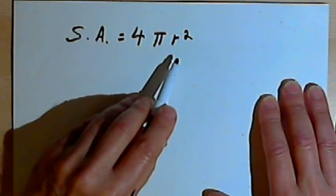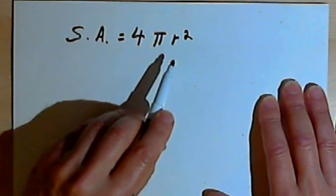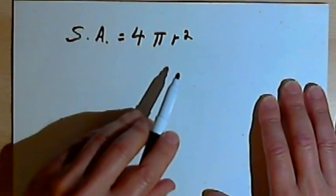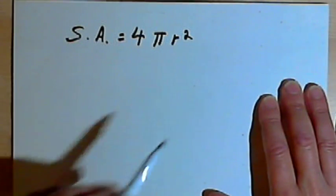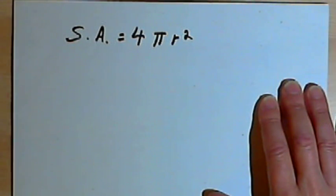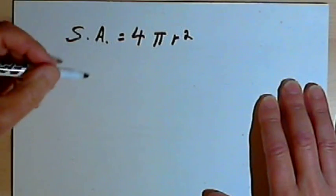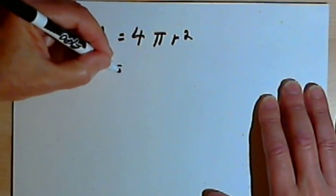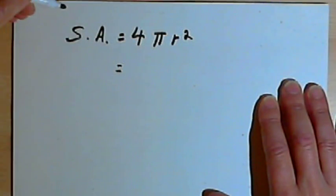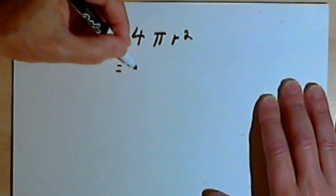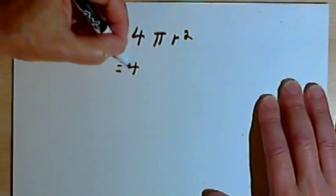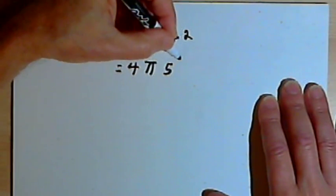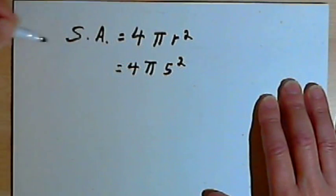Let's try an example and see how this would work. Let's say we've got a sphere — a ball — and it's got a radius of 5 inches. So to use this formula, what we'll do is instead of r, we'll put in a 5. So we're going to have 4 pi times 5 squared.